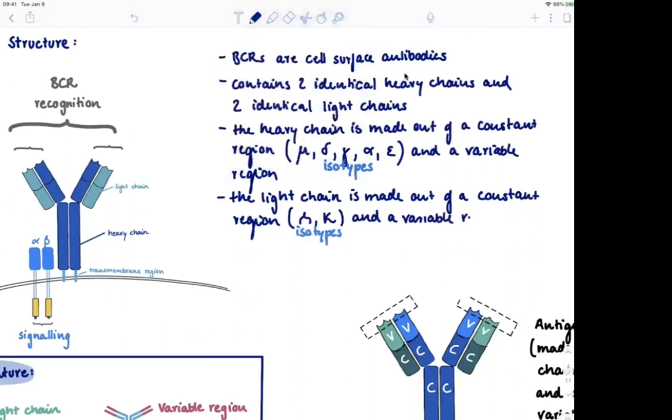And in contrast to the heavy chain, where the different isotypes have different functionality, so a Mu constant region will give rise to an IgM antibody, a Gamma constant region will give rise to an IgG antibody. They do different things. IgM does different things than IgG.